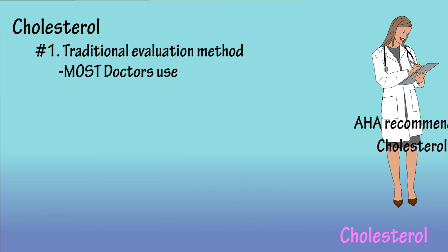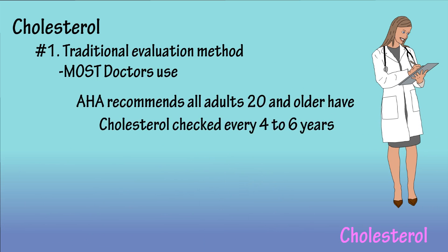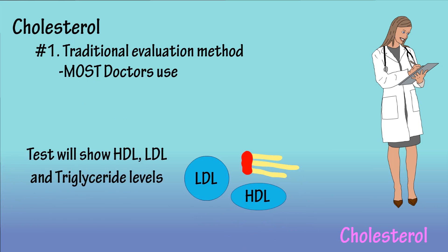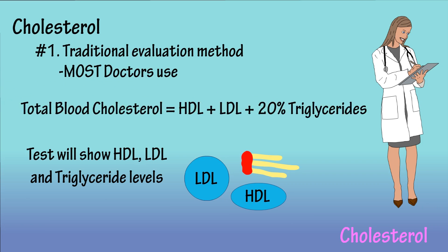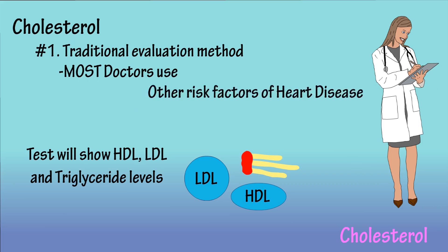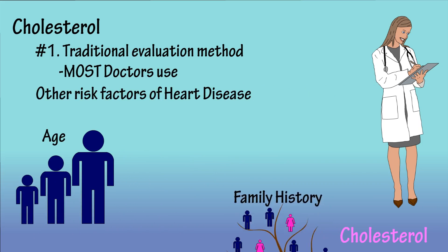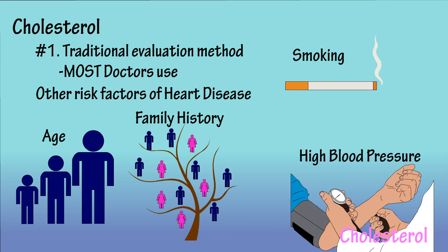The American Heart Association recommends all adults age 20 or older have their cholesterol and other traditional risk factors tested every four to six years. This test will show you your HDL, LDL, and triglyceride levels. Your total blood cholesterol level will then be calculated using the following equation: HDL plus LDL plus 20% of your triglyceride level. To determine how your cholesterol levels affect your risk of heart disease, your doctor will also take into account other risk factors such as age, family history, smoking, and high blood pressure.